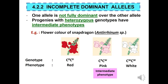Incomplete dominance occurs when one allele is not fully dominant over the other allele, so progenies with a heterozygous genotype show an intermediate phenotype. A good example is the snapdragon flower. The alleles are represented by capital letter C with superscript R for red color or superscript W for white color.